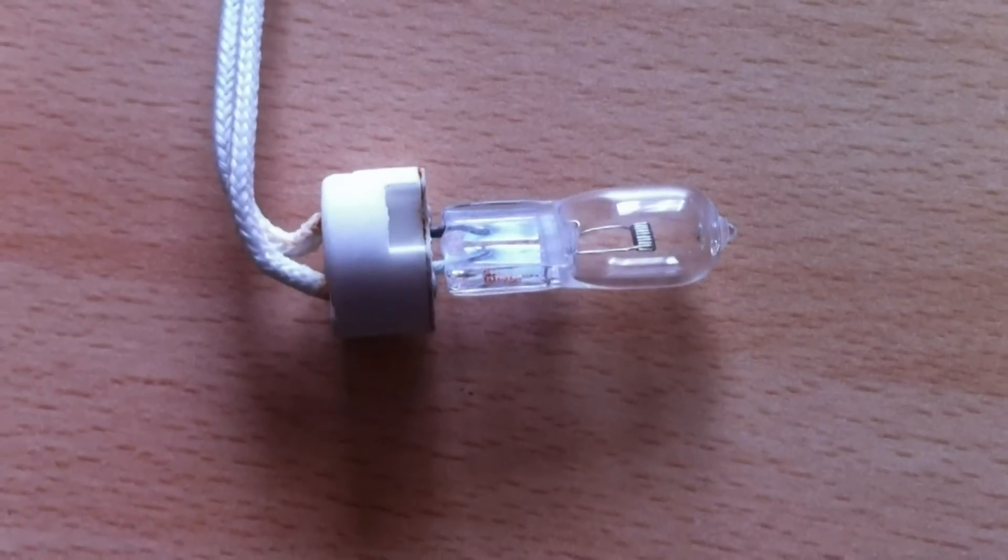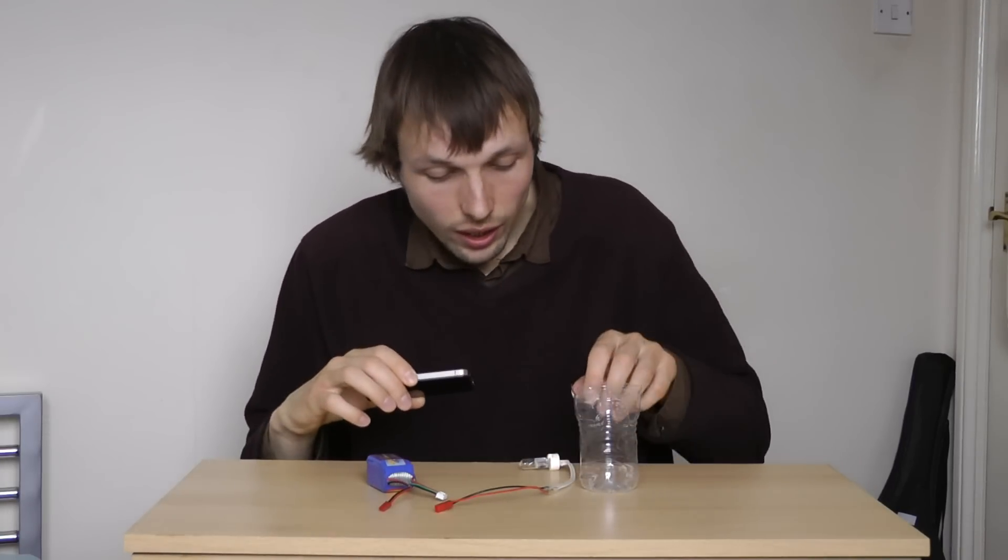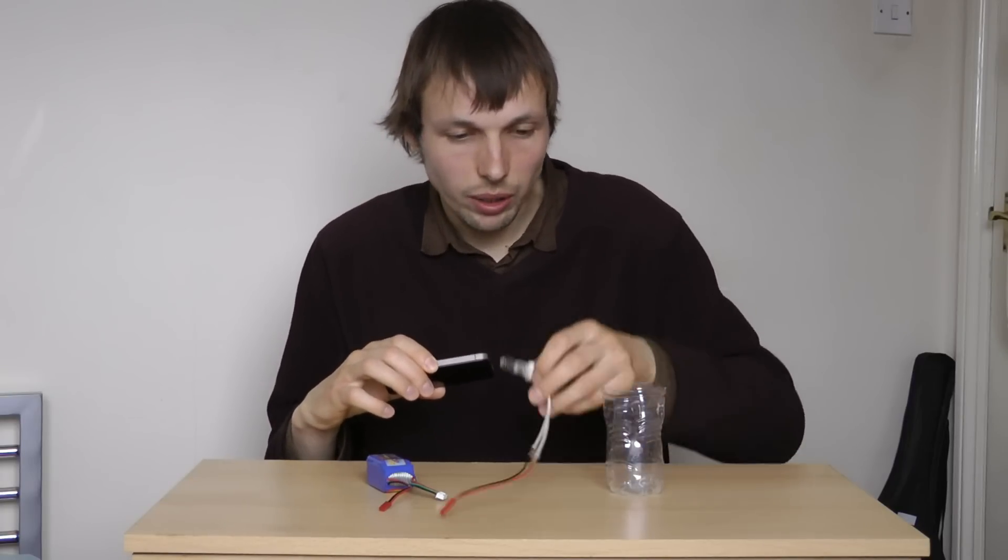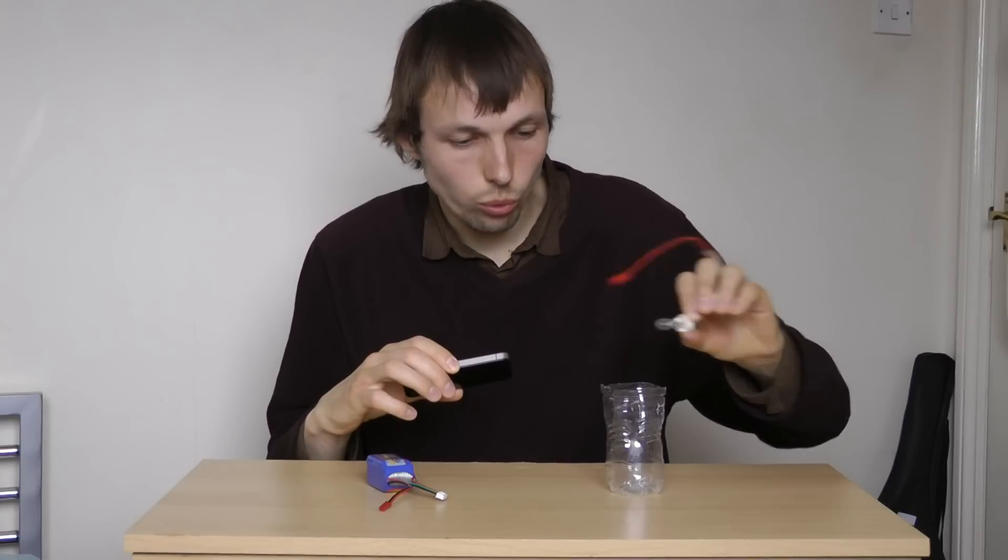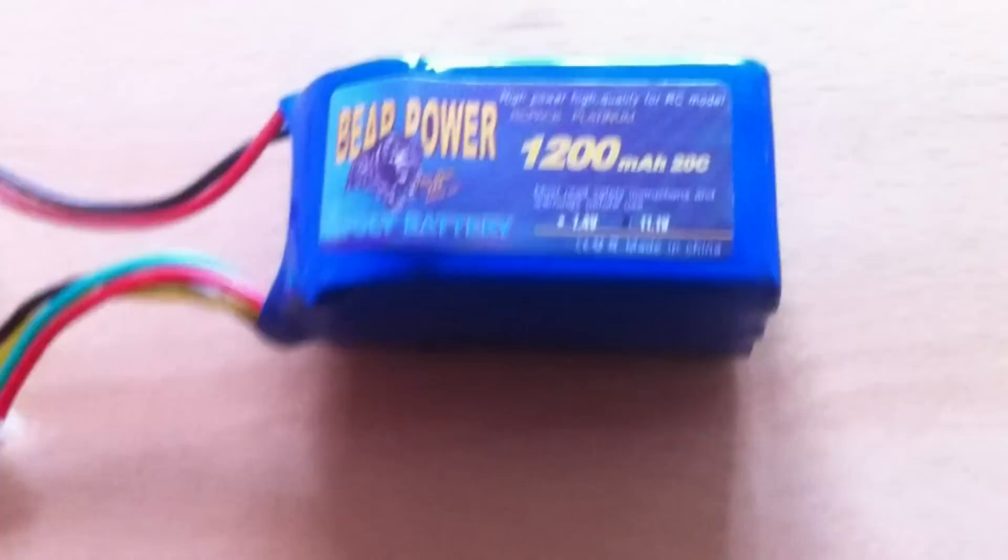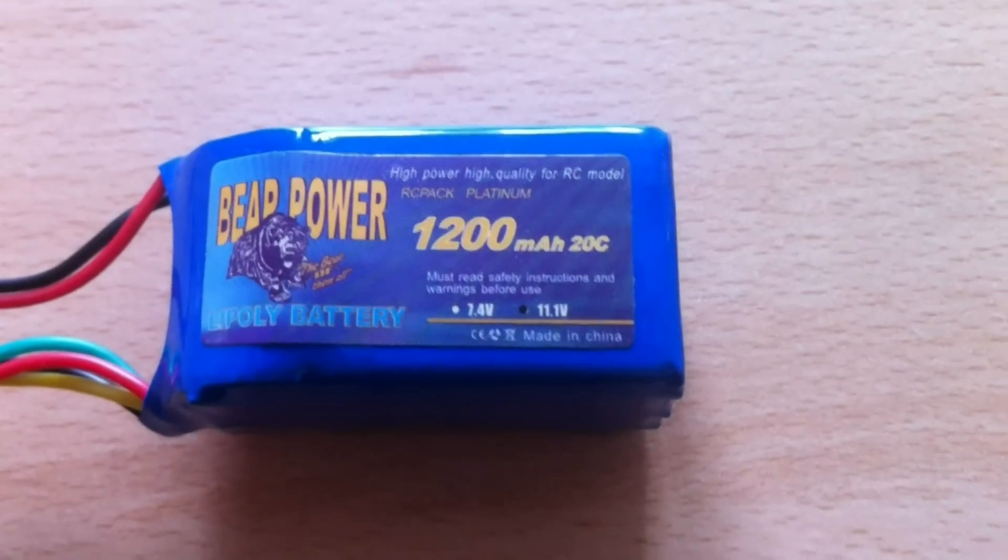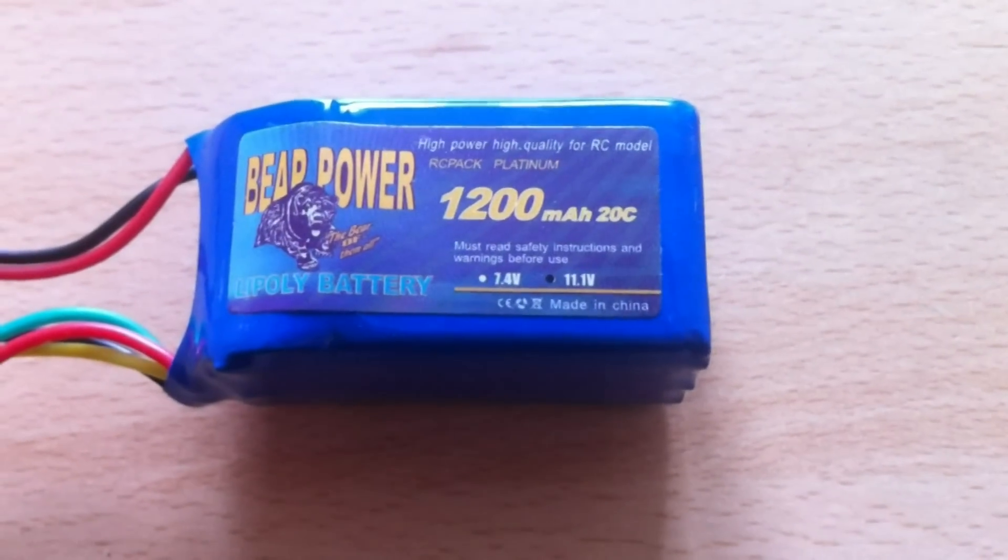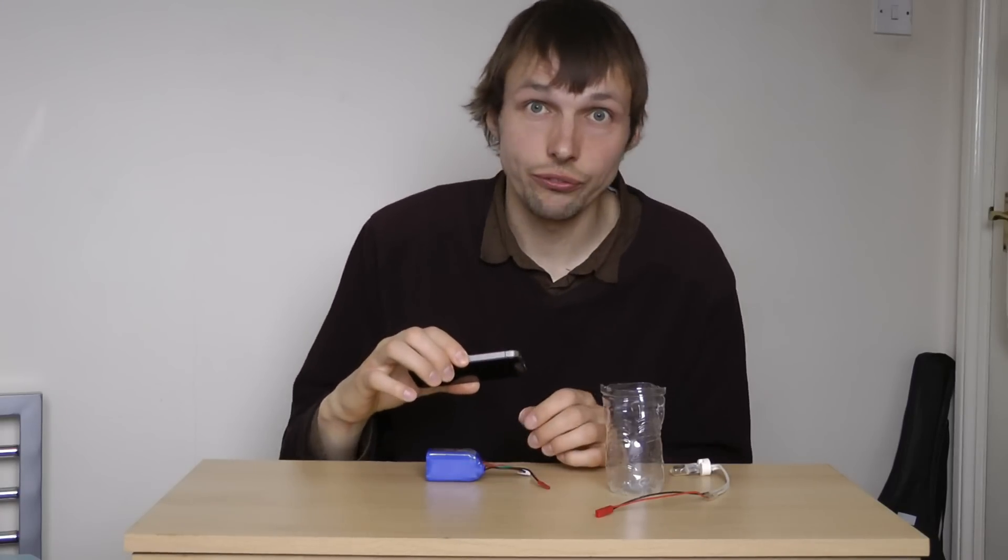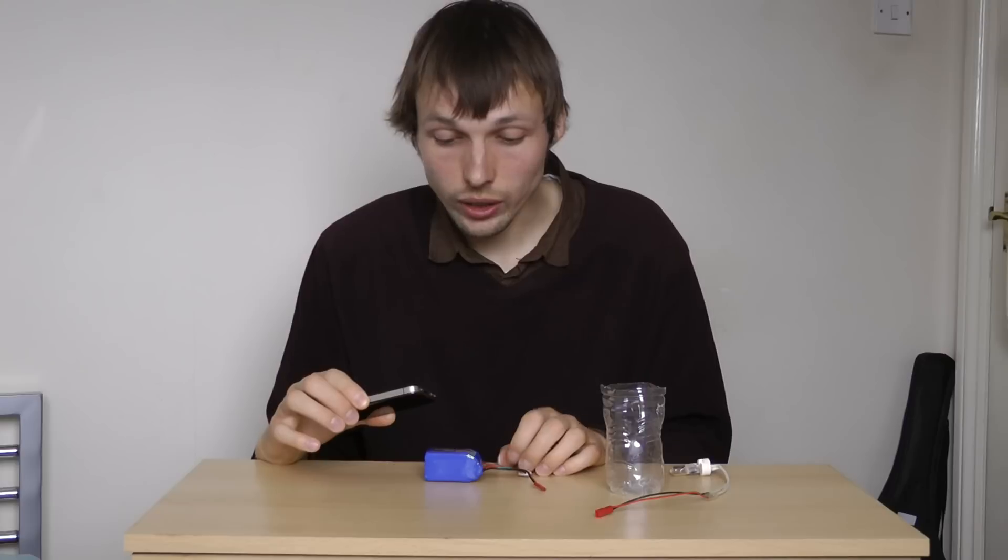which you can use for projectors or possibly also for car headlights. So I'm gonna put some water in this bottle, then I'm gonna put the bulb inside the water, then I'm gonna connect it to this battery which is an 11.1 volt lithium polymer battery. This battery can produce about 250 watts, so that will definitely be enough for a 100-watt light bulb.